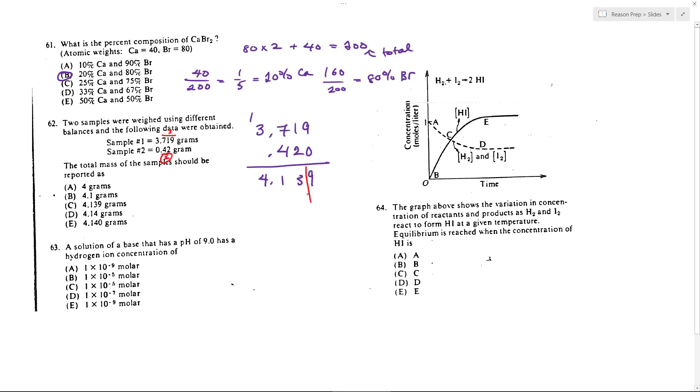So that means I'm going to slice it here and don't forget to round. So this rounds to 4.14, and that would be what your total would be once you've accounted for the sig figs. So for 62, we get D.